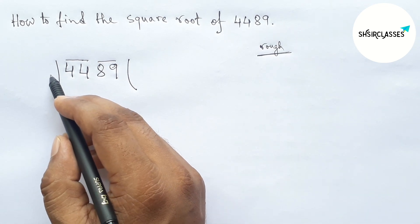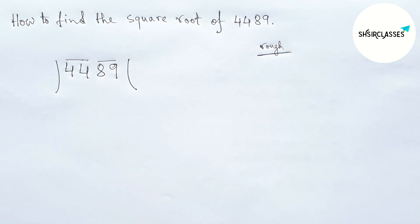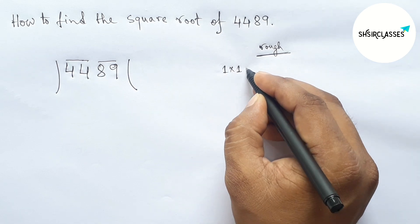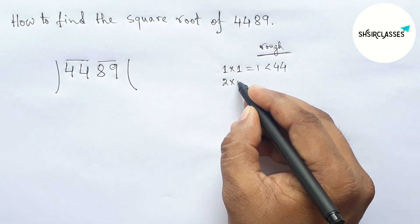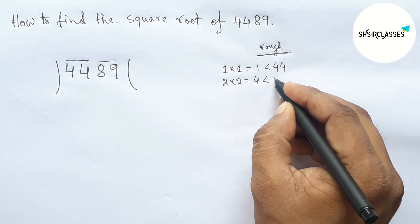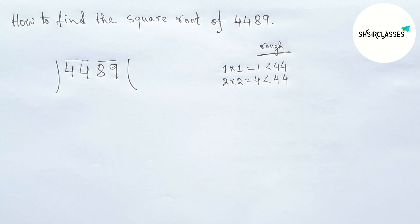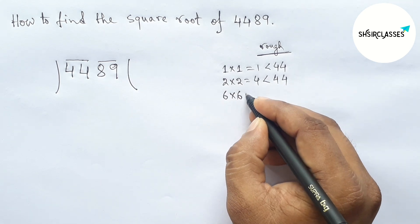Next, roughly discussing here some important calculations. So first choose here a number and multiplying by that number which is less than or equal to 44. So first choose here 1 and multiplying by 1, which is less than 44. Taking 2 and multiplying by 2, 4, which is less than 44 but not more closer to 44. So directly taking here 6 and multiplying by 6, so 36 which is less than and more closer to 44.